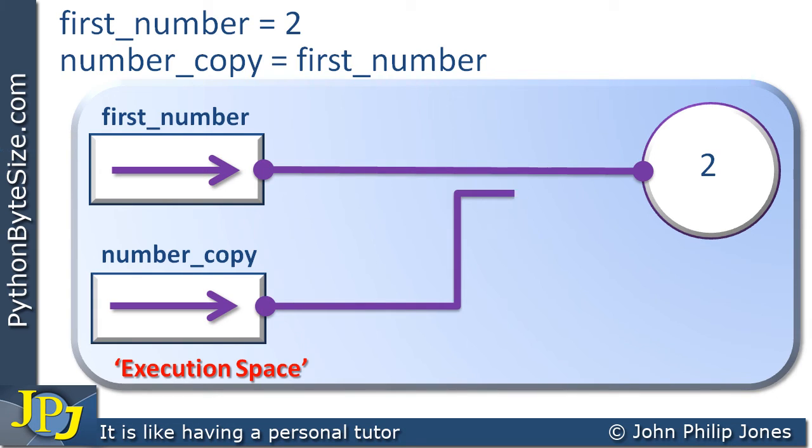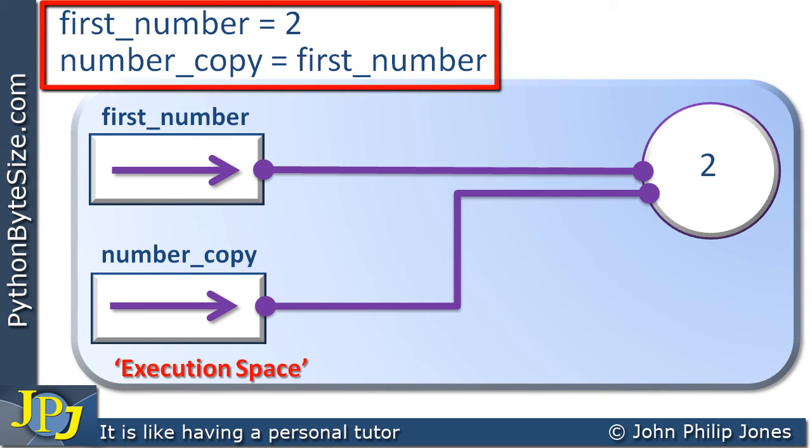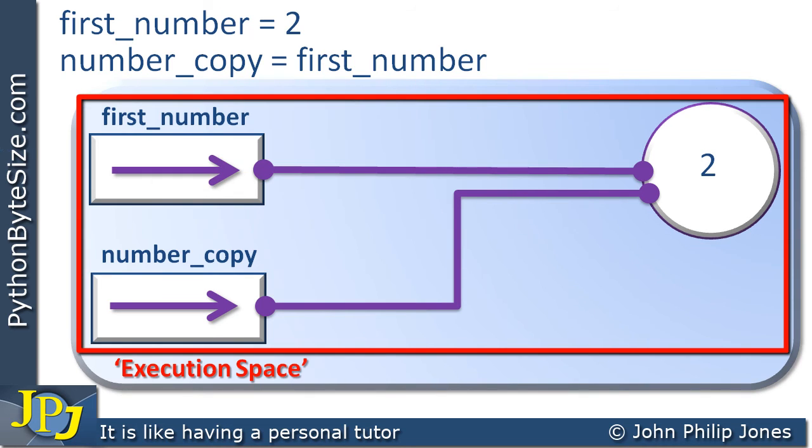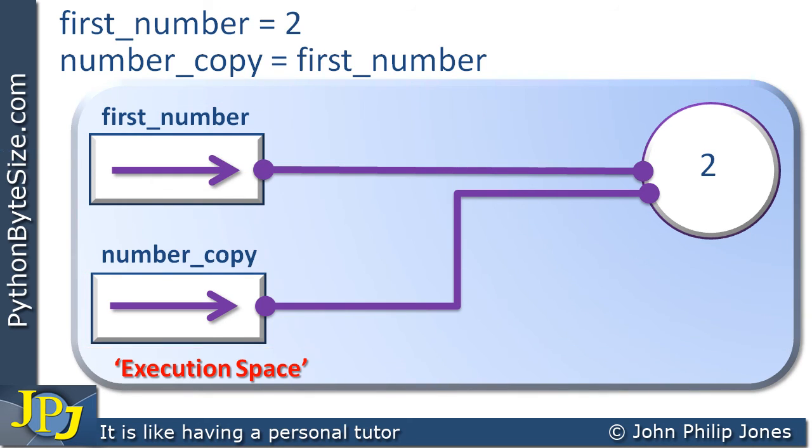So number copy is now also bound to the object that contains the 2. So when we finish executing these two instructions here, that's the setup in the execution space. Now both first number and number copy, as they appear in the program, both have 2. But you can see they both share the address of the object in the execution space.